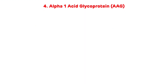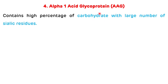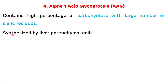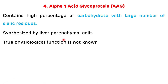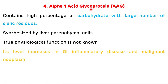Another example of alpha 1 globulin is alpha 1 acid glycoprotein. It contains a higher percentage of carbohydrate with a large number of sialic acid residues. It is synthesized by the liver parenchymal cells. The true physiological function of alpha 1 acid glycoprotein is not yet known. Its level is increased in gastrointestinal inflammatory disease and in malignant neoplasm.